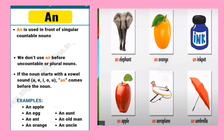Children, we studied that 'an' is used in front of words that start with vowel sounds. In addition to that, we also have to remember that 'an' is used in front of singular nouns — singular nouns which start with a vowel sound, and those nouns should be countable.